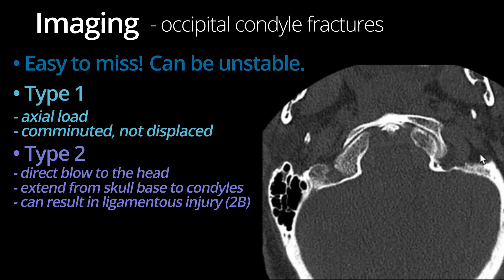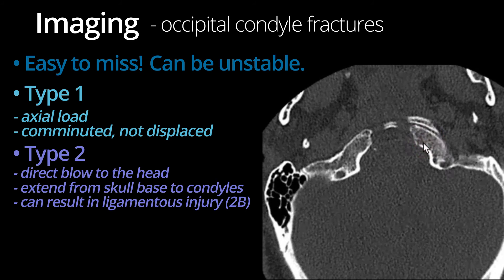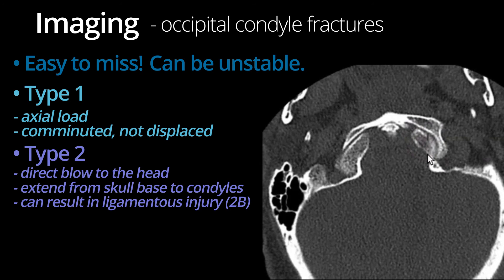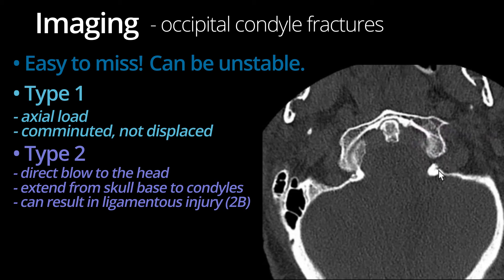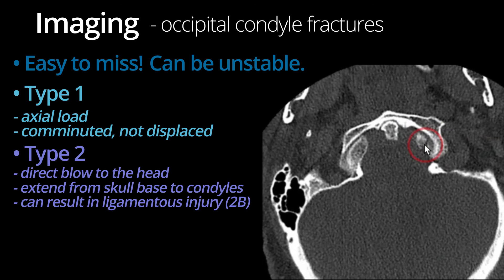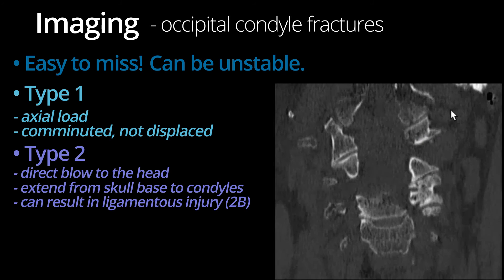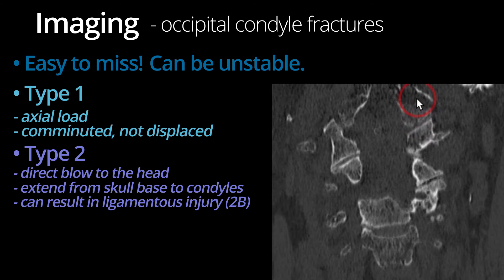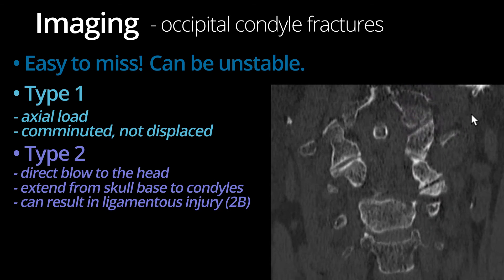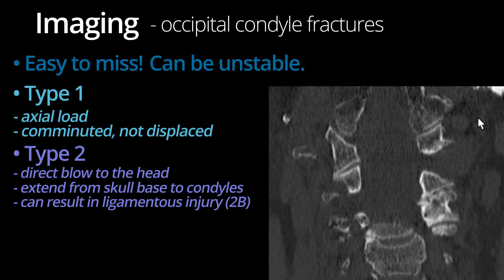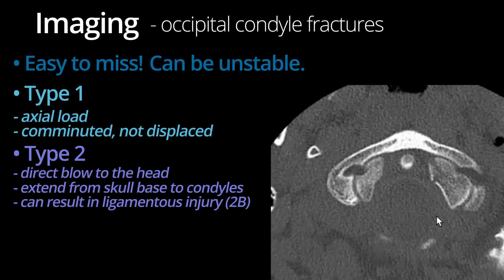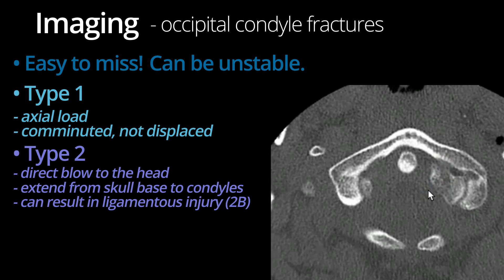Here is an example of a Type 2 acute non-displaced left occipital condyle fracture. As you can tell, these fractures can be very subtle and are easily missed if you are not specifically looking for them. The fracture lucency is also seen on the coronal. Here is another minimally displaced left Type 2 occipital condyle fracture.